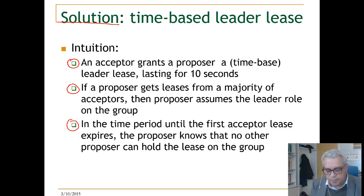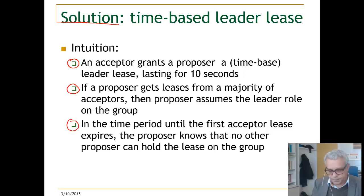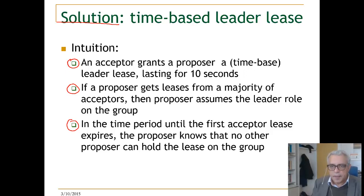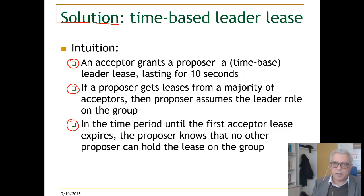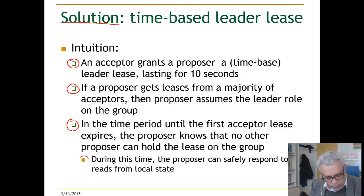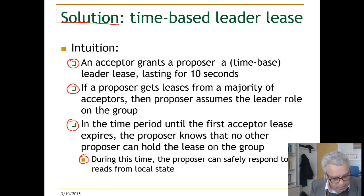In this time period, until the first acceptor lease expires, the proposer knows that no other proposer can hold the lease on this group. This means that even if this leader — as in the scenario we discussed, where P1 was partitioned from the rest of the system — he knows he is still a leader for that period of time. So, for example, he can answer read requests from his local state.